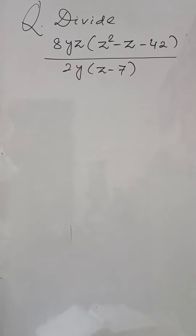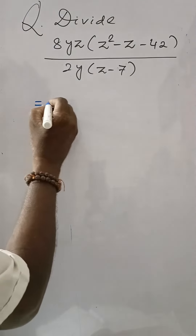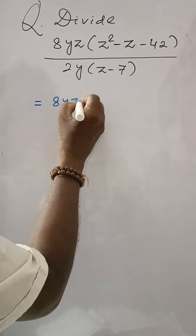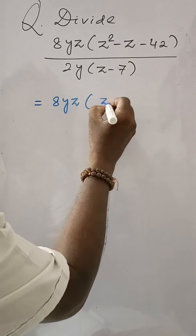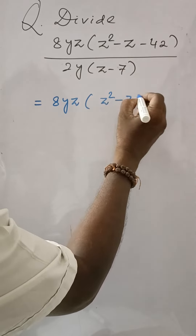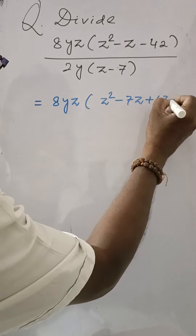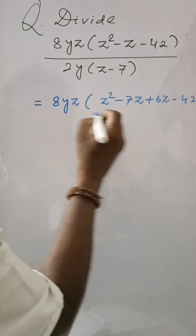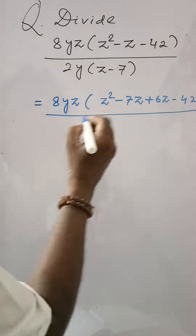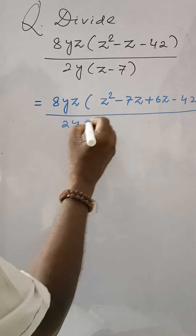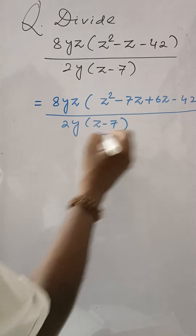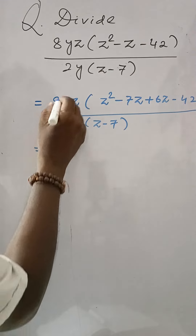Divide 8YZ by (Z² - Z - 42) divided by 2Y(Z - 7). Here 8YZ into Z² - 7Z + 6Z - 42, using middle term splitting, divided by 2Y into Z minus 7. This gives 2.